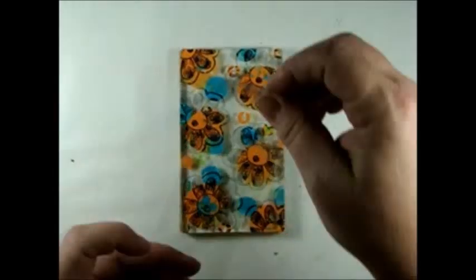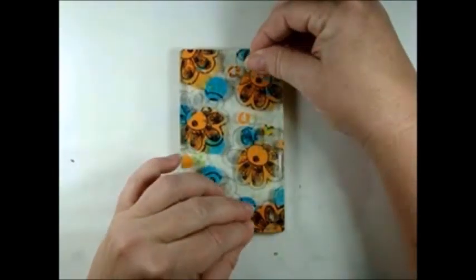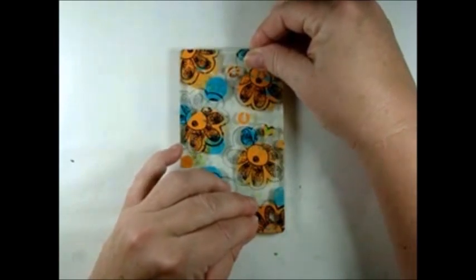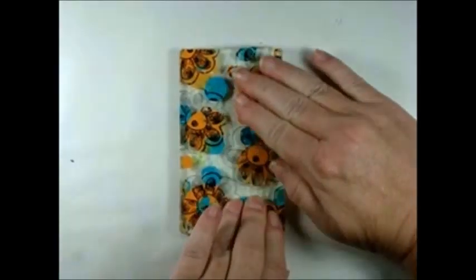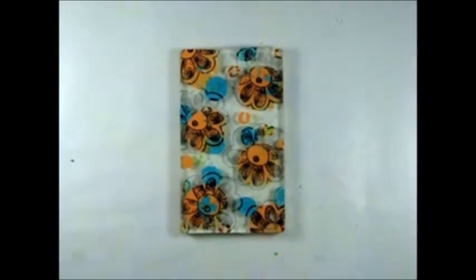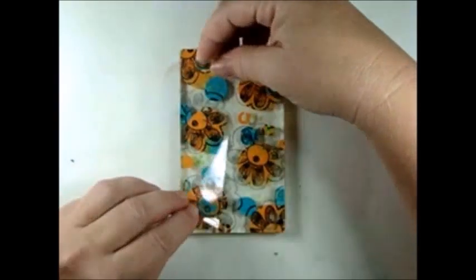Now that the ink from the stamps has dried, you're just going to repeat the same process. You're going to lay your tape back on top of your gel press plate and burnish it down. And then pull it off, just like before.